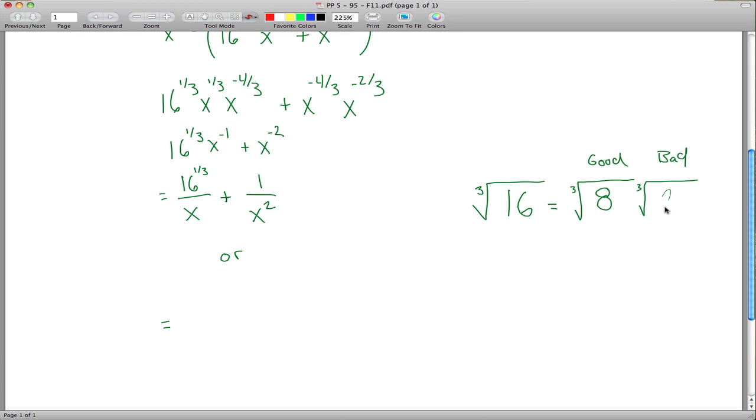16 is 4 times 4, but that won't really help us because neither 4 nor 4 is a perfect cube. If you think about this for a little while, maybe you'll come up with 8 and 2 because 8 is a perfect cube, 2 times 2 times 2 equals 8. So the cube root of 16 is really 2 cubed root of 2.